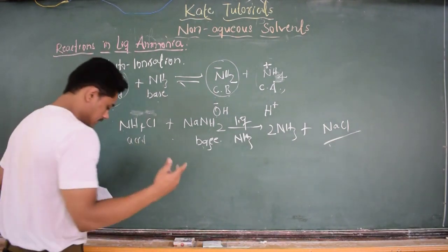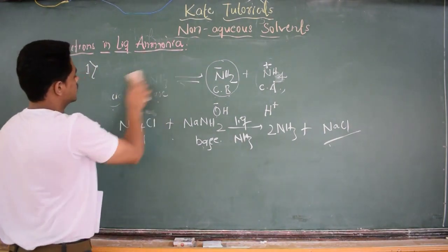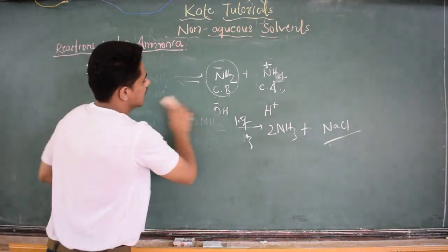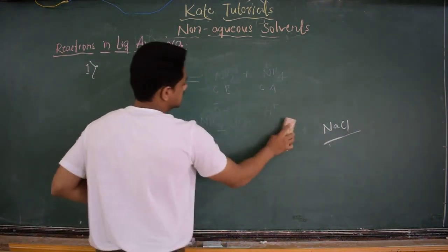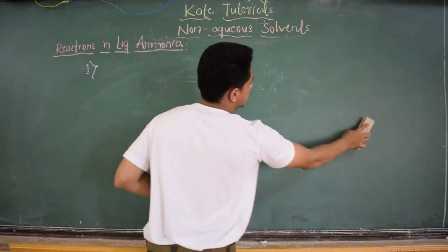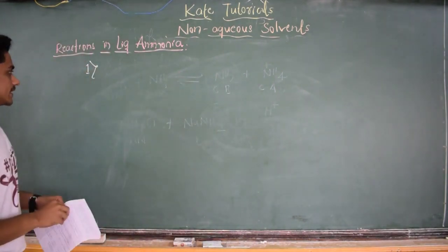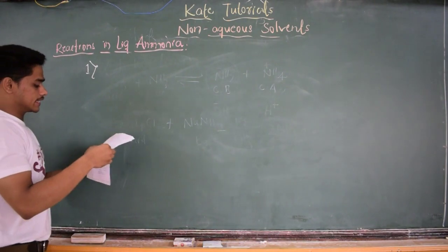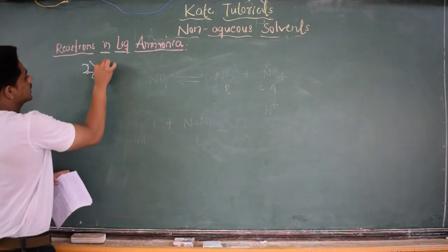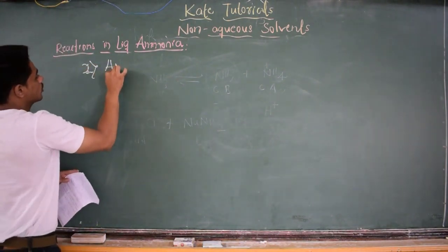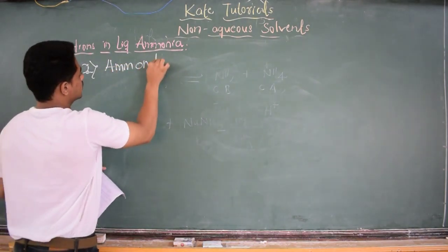The next reaction type is solvolysis. Solvo means solvent; lysis means breaking. Breaking of the solvent is nothing but solvolysis. Since the solvent here is ammonia, this process is called ammonolysis or aminolysis.